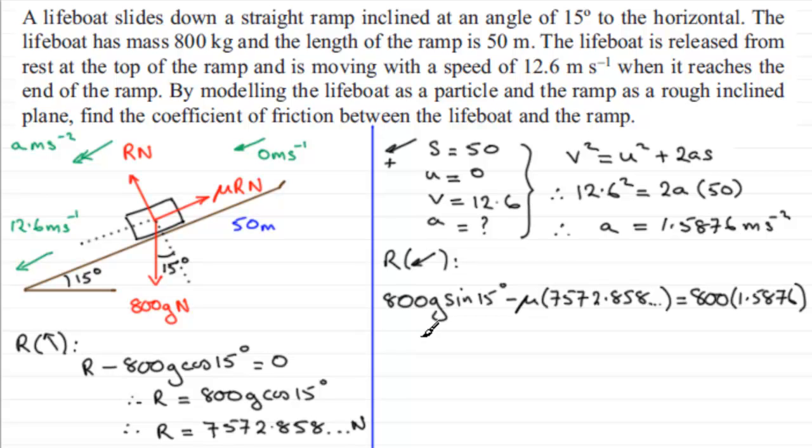If I rearrange this for mu, if I take 800g sin 15, taking g to be 9.8, I get 2029.1413. I'm going to add this term to both sides. If I take 800 times 1.5876 and take it away from both sides, that term comes to 1270.08. That equals mu times 7572.858. If I divide both sides by that value, we can pop it underneath here as 7572.858. I've had to do this fairly quickly to get it on one screen.